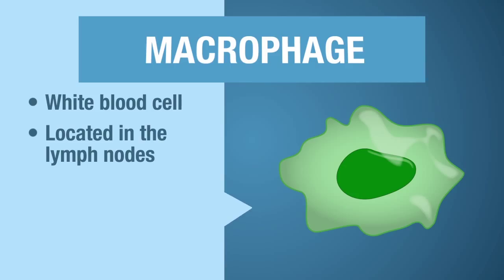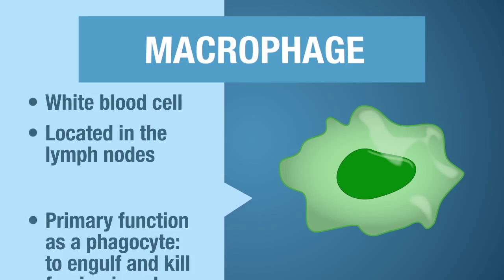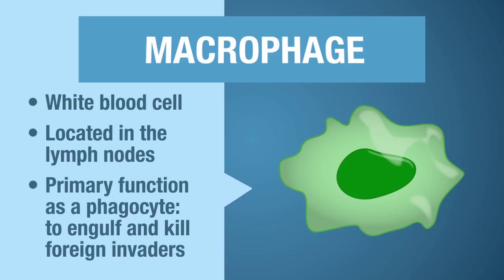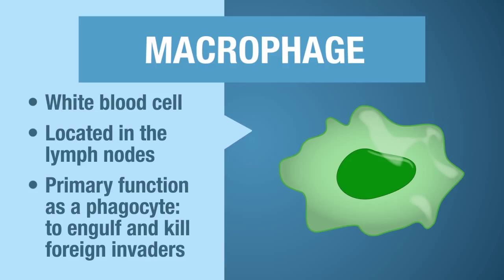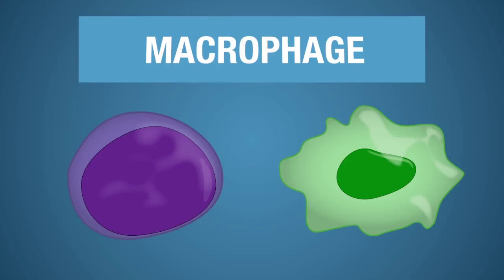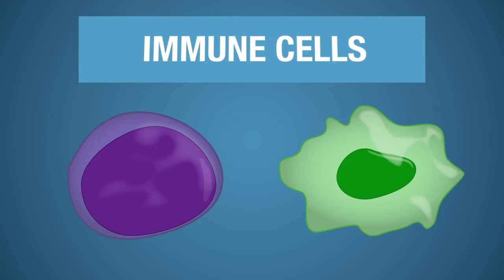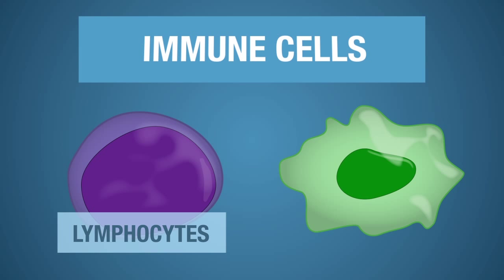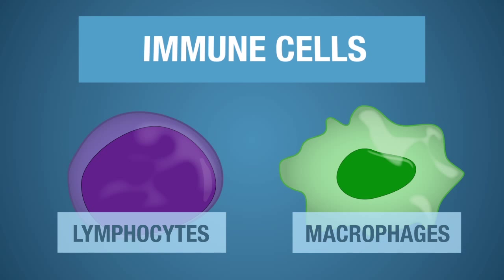All cells have a job. Macrophages are phagocytes, so their job is to engulf invaders of the body and kill them. The two immune cells important in the lymphatic system are lymphocytes and macrophages.